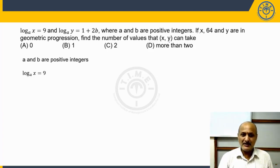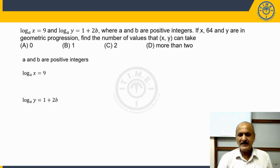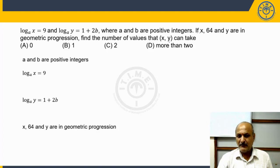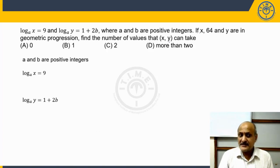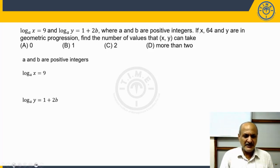Next, in the logarithmic conditions, it says log x to the base a is equal to 9, log y to the base a is equal to 1 plus 2b, and x, 64, and y are in a geometric progression. Let's interpret these logarithmic parts first and then proceed further.